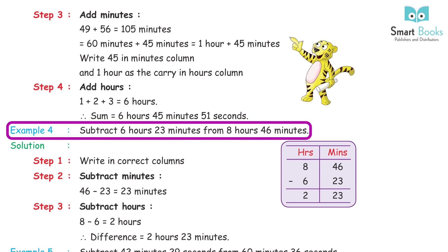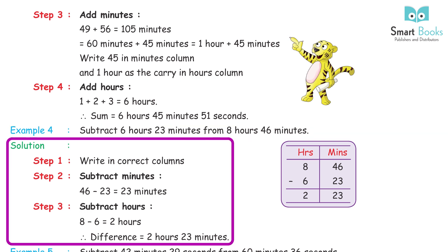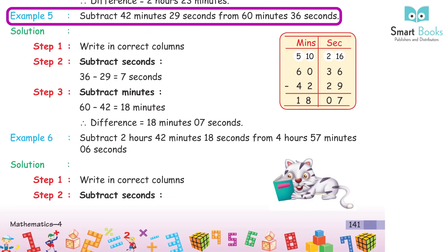Example 4: Subtract 6 hours 23 minutes from 8 hours 46 minutes. Step 1: Write in correct columns. Step 2: Subtract minutes — 46 − 23 = 23 minutes. Step 3: Subtract hours — 8 − 6 = 2 hours. Difference = 2 hours 23 minutes.